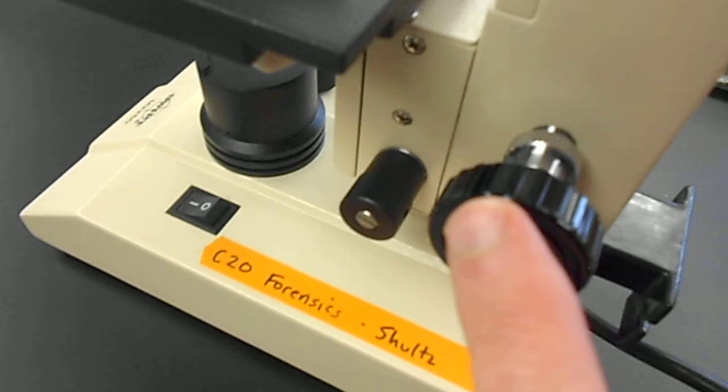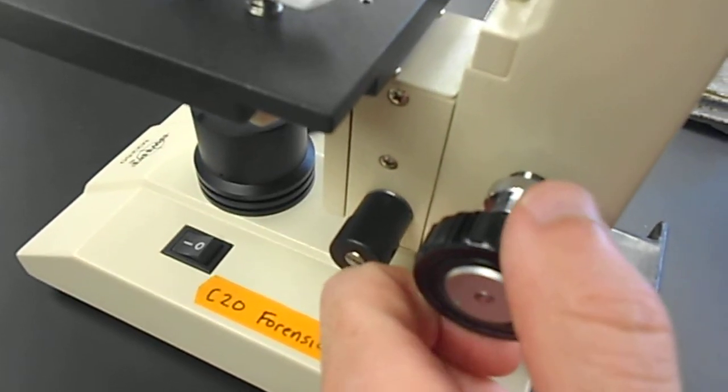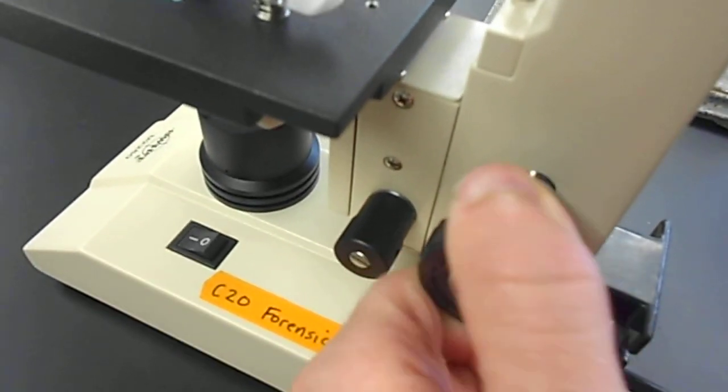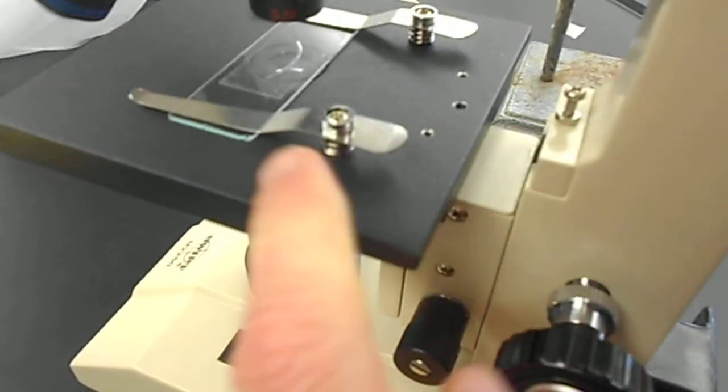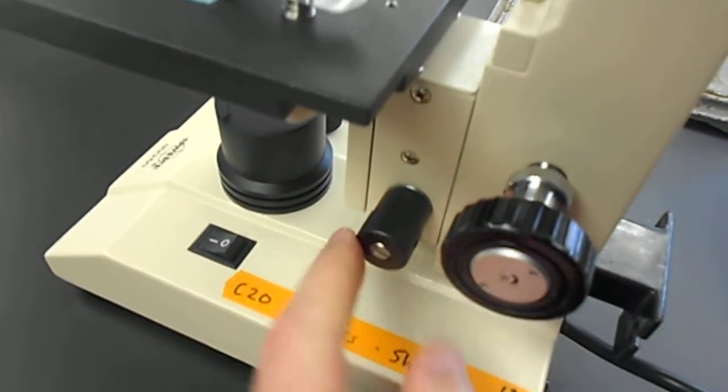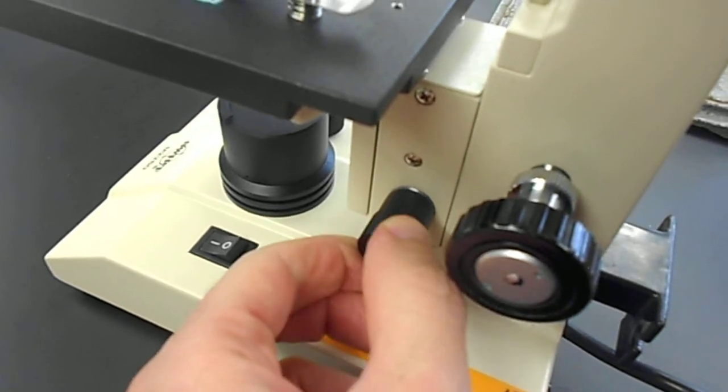And then two focusing knobs. Here's the idea. The big one is called coarse focus. That makes big changes in focus. Notice the stage moving up and down. And this is the fine focus that will make the last few little adjustments that you may need.